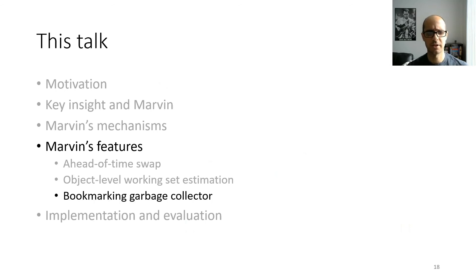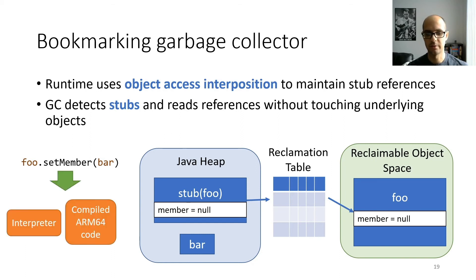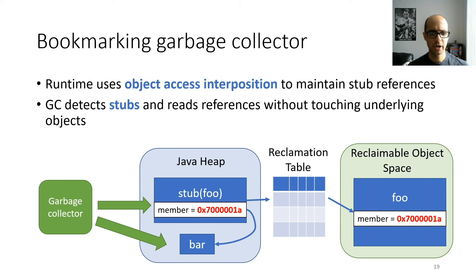For our swap-aware garbage collector, the GC uses object access interposition to ensure stubs always have up-to-date copies of their object's references. If app code sets an object's reference member variable, the interpreter and compiled code update that member variable in both the stub and the underlying object. When the garbage collector runs, it can check for the presence of stubs, and when it finds a stub, it can read references directly off the stub without having to touch the underlying object. So if the underlying object is swapped out, the garbage collector does not have to swap it back in.